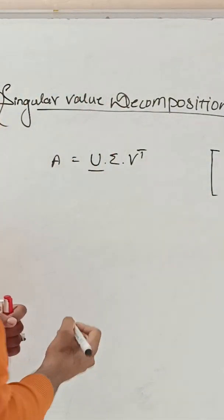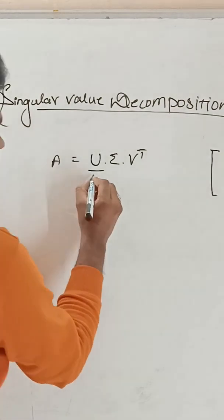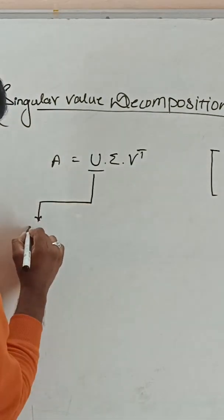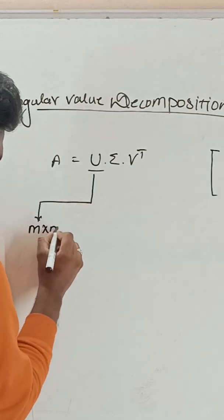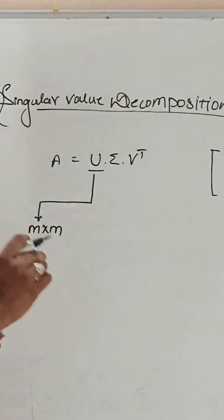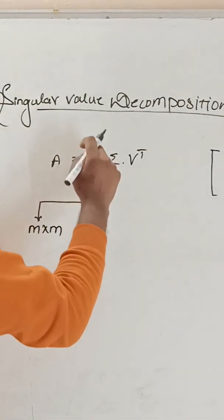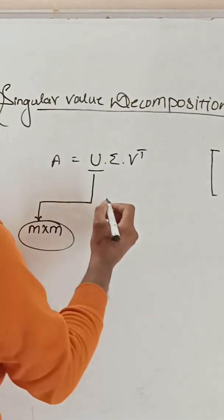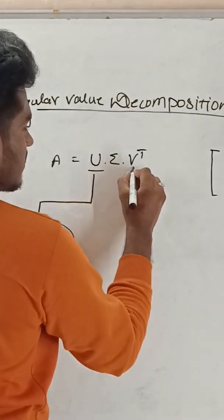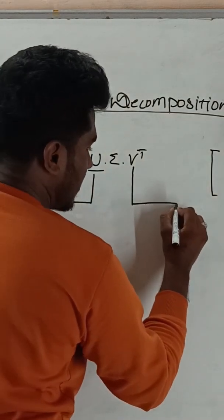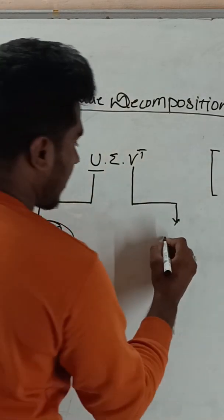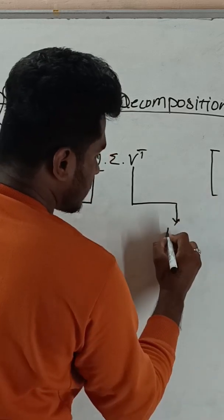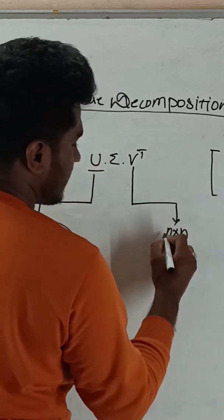This U can be order of M by M. So the obtained U value should be in the order of M by M. Then this particular V value, it should be order of N by N.